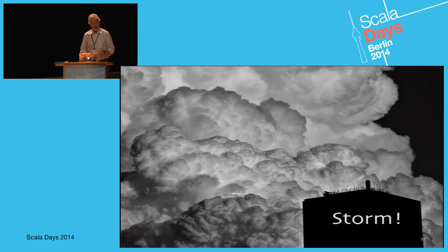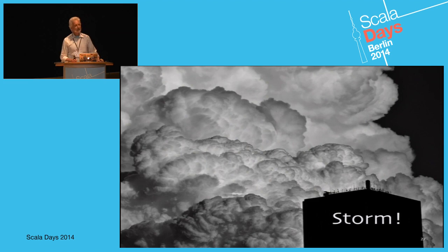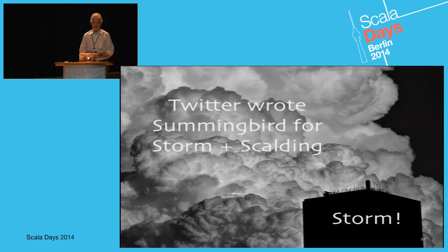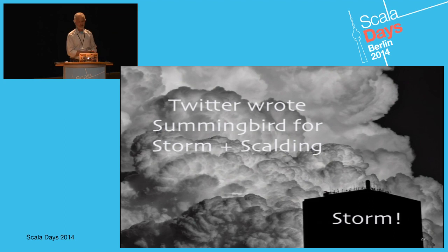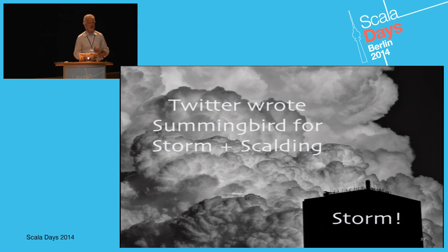Storm was written by Nathan Marz, one of the geniuses in the space. It's a tool for supplementing a Hadoop cluster with a real-time cluster. Nathan wrote a great book called Big Data where he describes the Lambda Architecture, integrating real-time and batch mode processing. Twitter bought Nathan's company, became a big Storm user, and realized many jobs had pretty much the same logic for both Storm and Scalding.